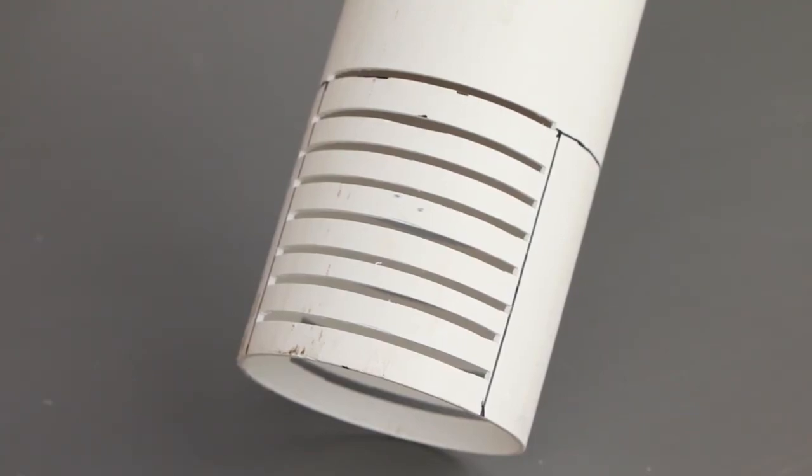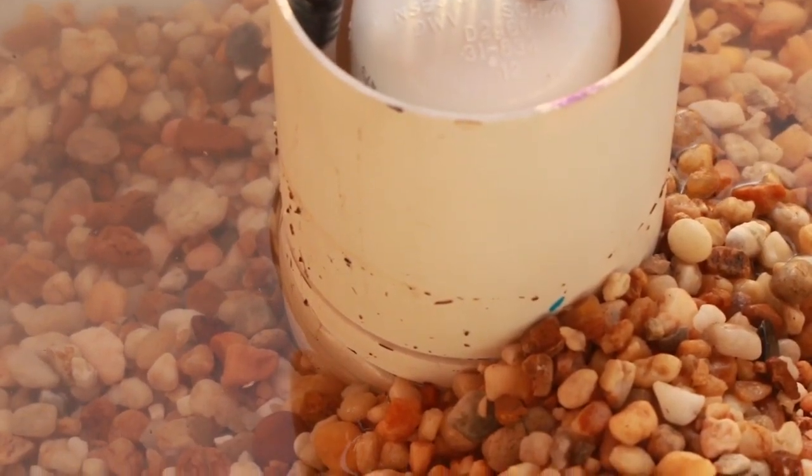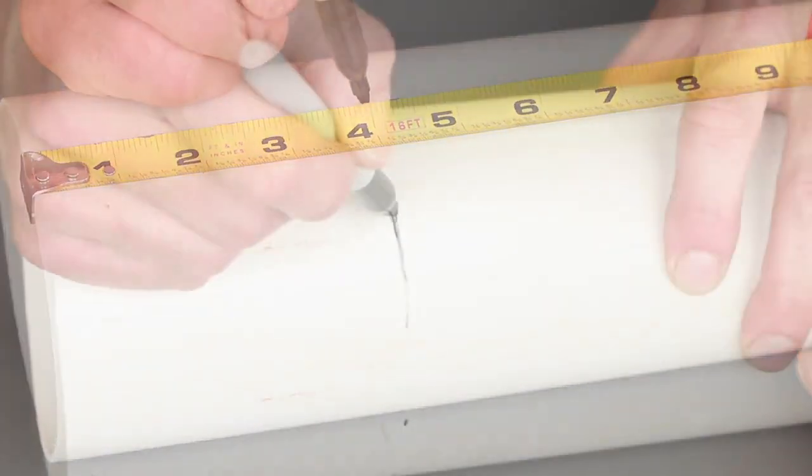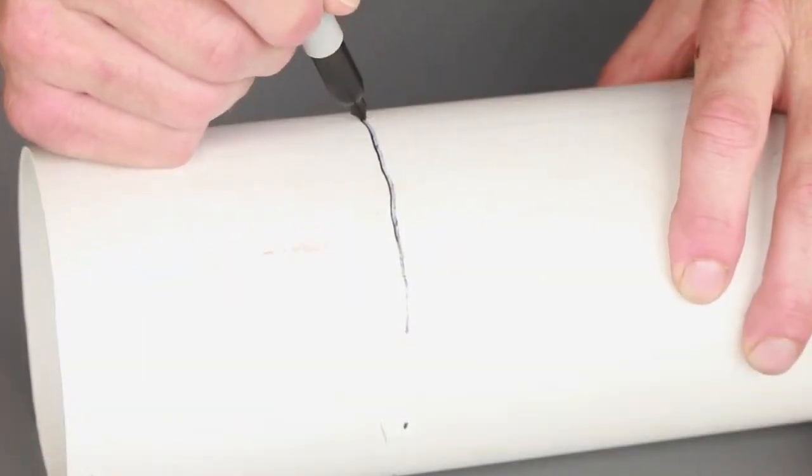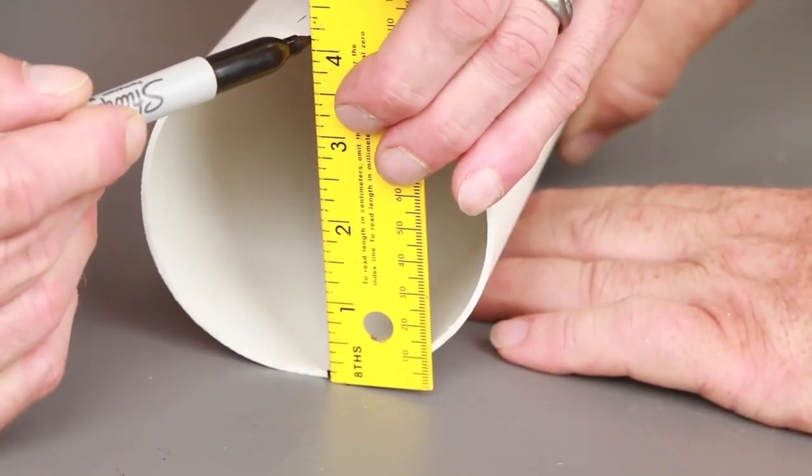The slits will allow water to pass through the protective sleeve so it can get to the overflow pipe. Measure 4 inches up from one end of the pipe and draw a line around the pipe. Place a straight edge across the widest diameter of the pipe and make a mark on either side.